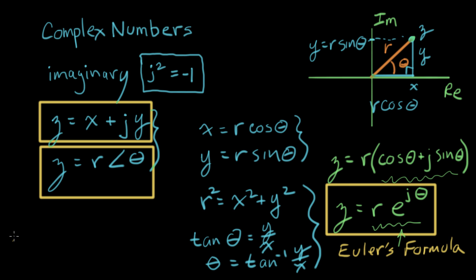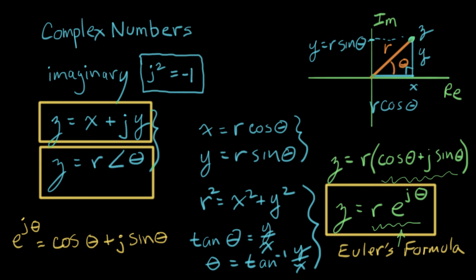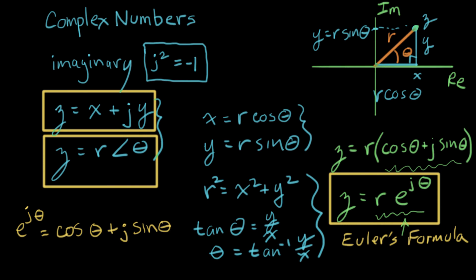And let me write that down over here. Euler's formula is e to the j theta equals cosine theta plus j sine theta.